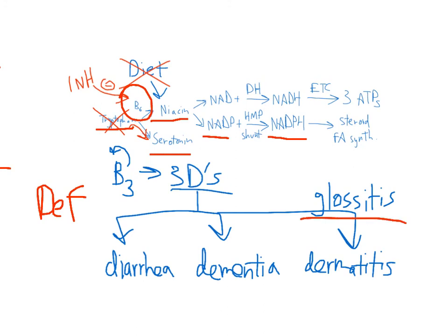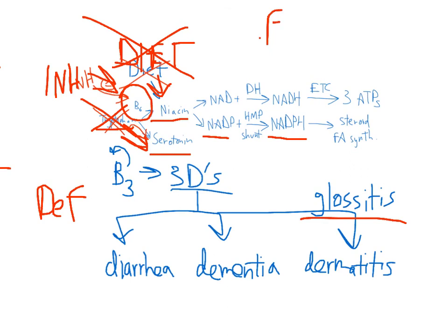And the ways that we can get a B3 deficiency is either lacking in the diet, Hartnup syndrome where you don't have tryptophan, carcinoid syndrome where you have excess shunting to serotonin, and finally INH, which can block B6, which is the cofactor. And if you have an excess, this is used all the time as a cholesterol drug that can cause facial flushing.